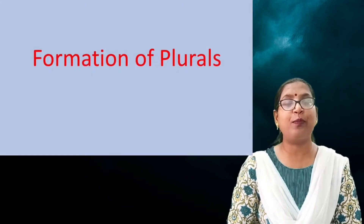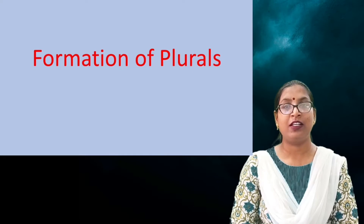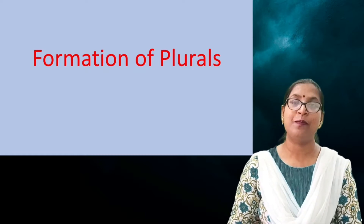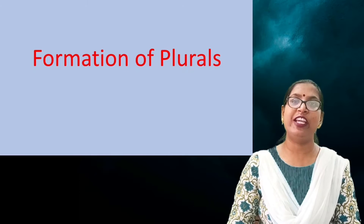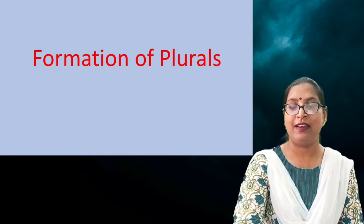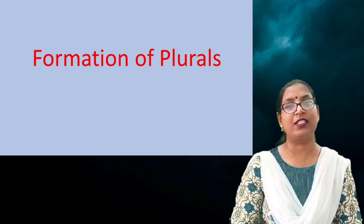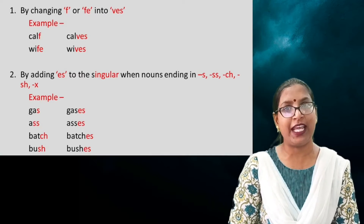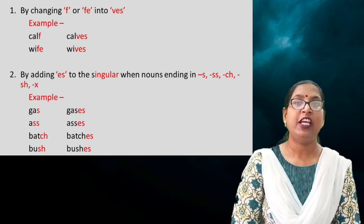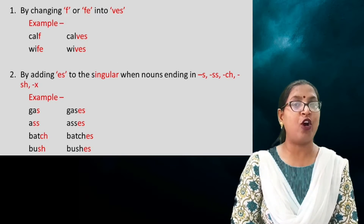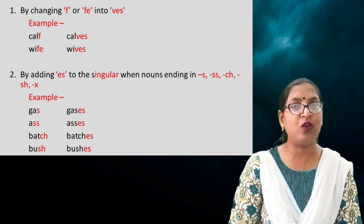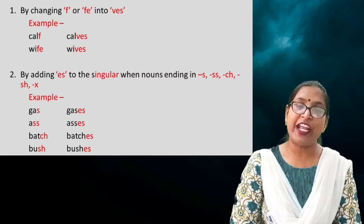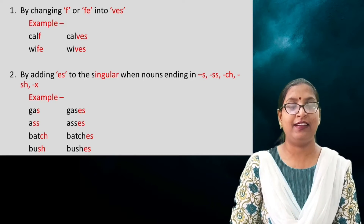Now, a very important topic: the formation of plurals. From singular nouns we make the plural forms, and for changing them into plural we have to follow certain rules. Let us study all these rules. The first one is by changing F or FE into VES. If your word ends in F or FE, those letters are changed into VES.